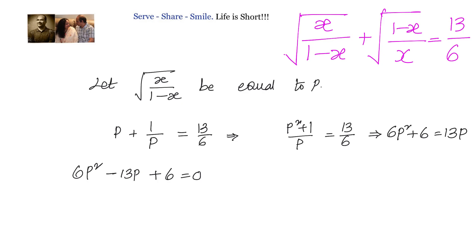So we have to split the middle term, factorize, or you can use quadratic formula. We have sum equals to minus 13 and product equals to 6 into 36. We can take minus 9 and minus 4 which will satisfy both sum and product.